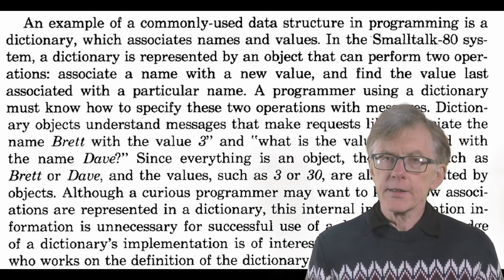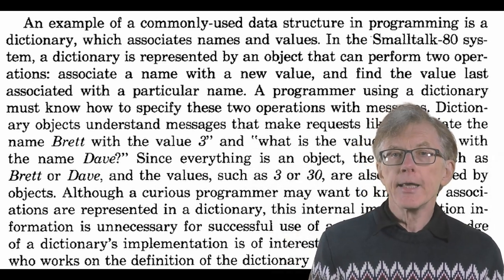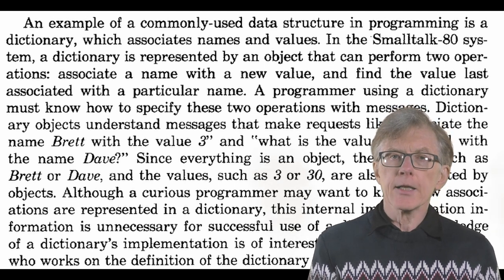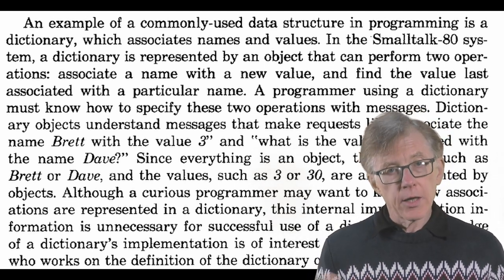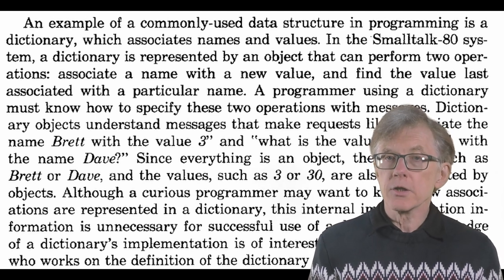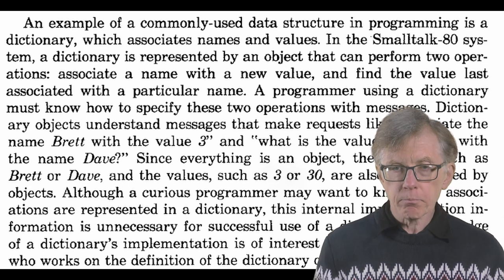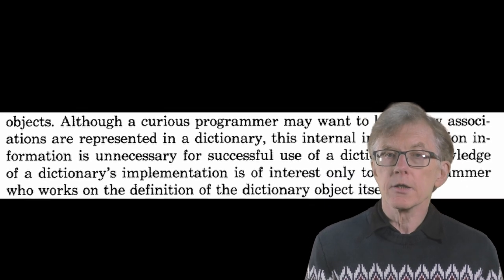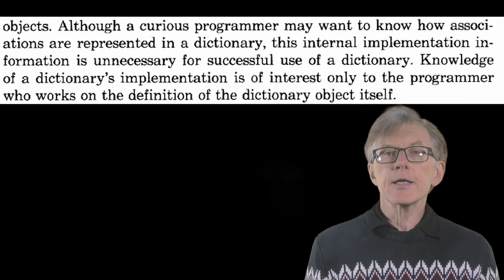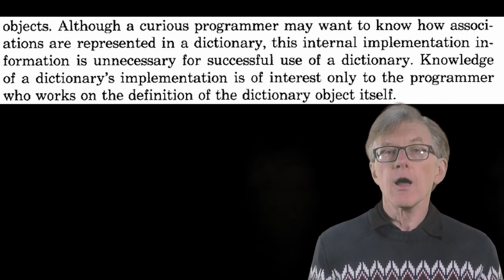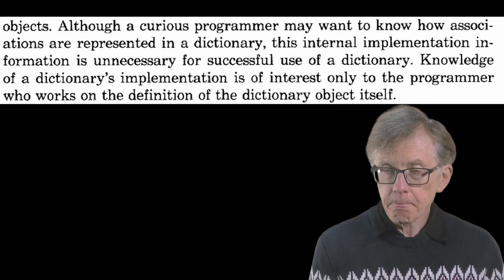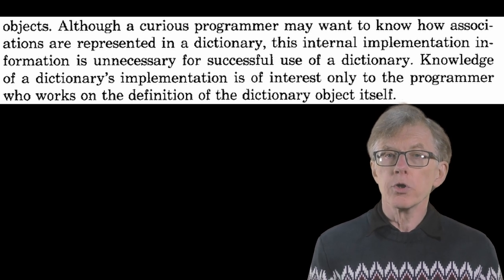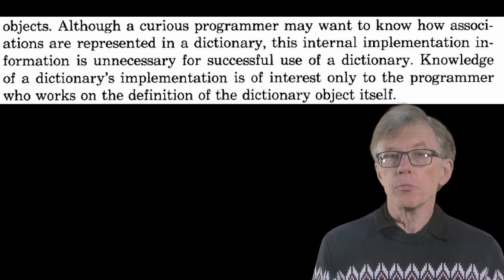Adele Goldberg gives the example of a dictionary object — a set of key-value pairs — where a key such as the integer 30 is associated with a string value such as the name "Dave". You can pass an integer to a dictionary as a message and the dictionary will send back the value associated with it. Goldberg says: "Although a curious programmer may want to know how associations are represented in a dictionary, this internal implementation information is unnecessary for successful use of a dictionary. Knowledge of a dictionary's implementation is of interest only to the programmer who works on the definition of the dictionary object itself."